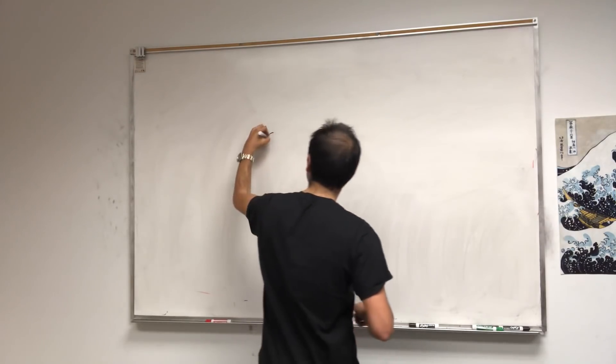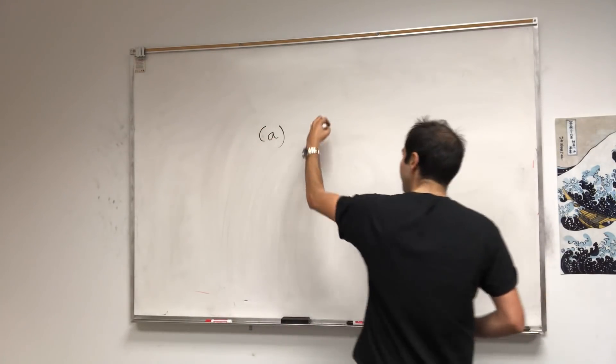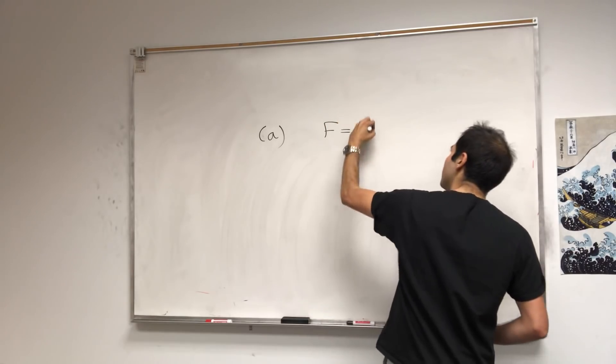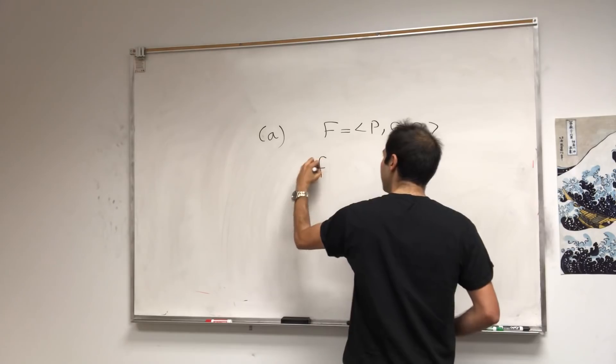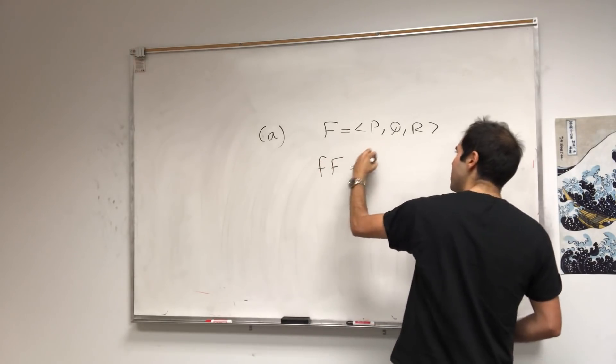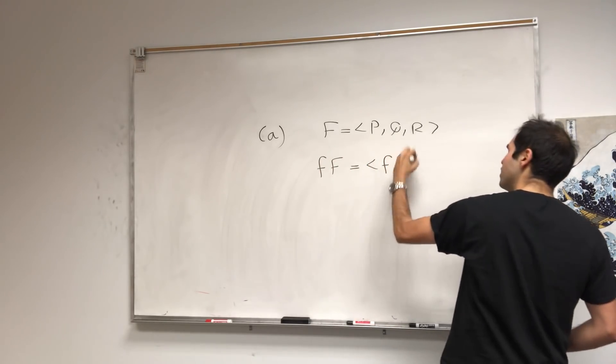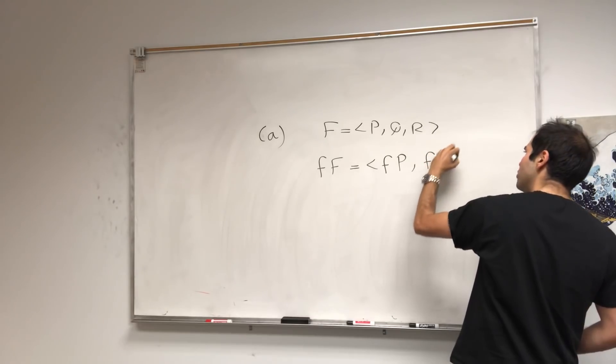And it's a two-parter. So first of all, if you have a vector field F which is P, Q, R, then we define a function times a vector field, just a vector field of F, P, F, Q, F, R.